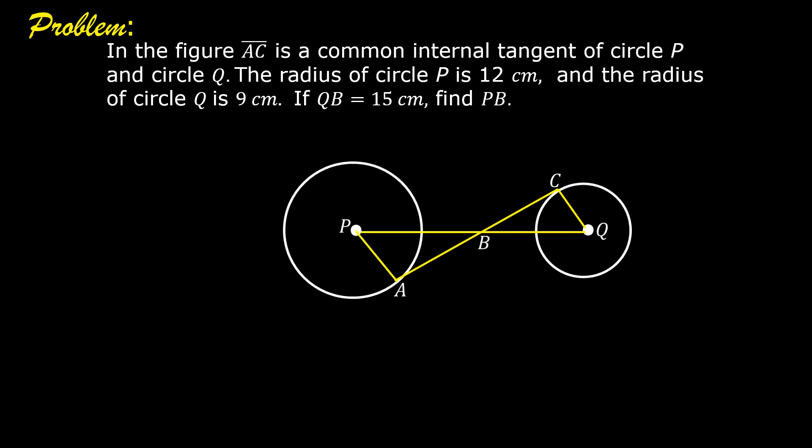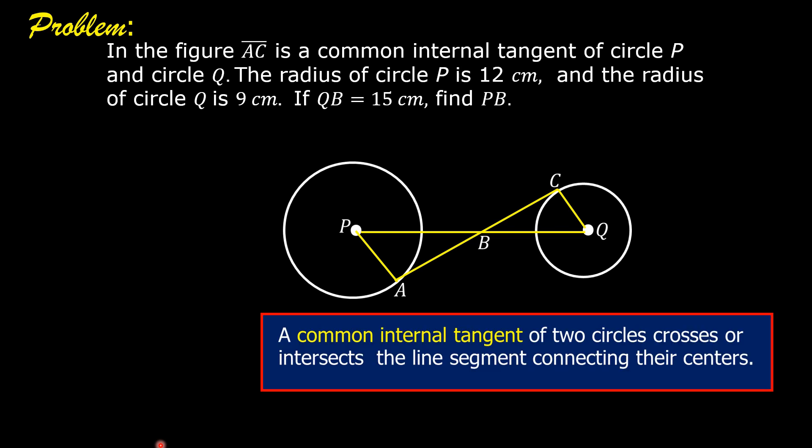These are the given data: segment AC, which is a common internal tangent of circle P and circle Q. A common internal tangent of two circles crosses or intersects the line segment connecting their centers. So this is the common internal tangent of circle P and circle Q crosses or intersects segment PQ connecting the center